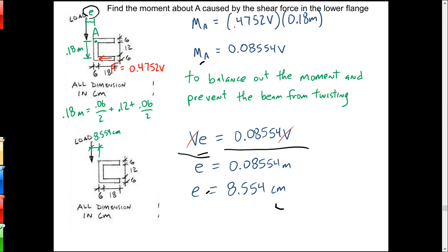The V's cancel, so e equals 0.08554 meters, which is 8.554 centimeters. If you're working for one of those truck companies figuring this out for a motor mount, you're going to put the mount at least 8.554 centimeters over from point A, which is in the center of the web. The center of the web is 3 centimeters from the edge, so that bracket extends at least 5.554 centimeters to the left. Load the thing up there, that counterbalances the twisting action, and everything is nice, squared up, and clean. That's called shear center.